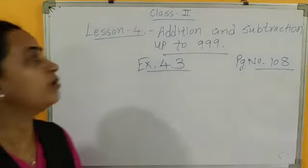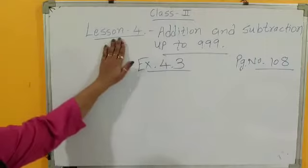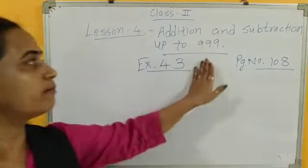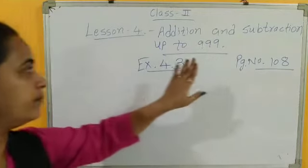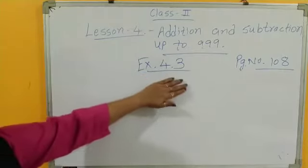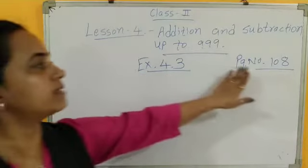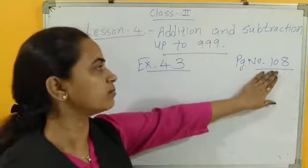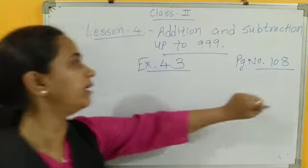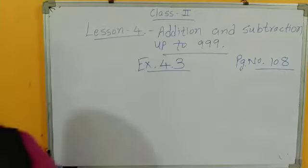Hello children, today lesson number 4, Addition and Subtraction up to 999. In this exercise 4.3, page number 108. In your textbook, page number 108, exercise 4.3.